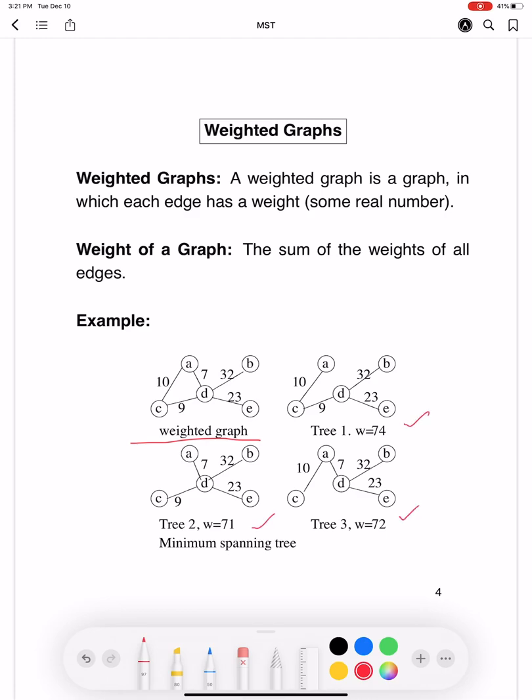And if you add up the weights on the edges of these different graphs, you will see that the different trees have different weights. For example, tree 1 has weight 74, T2 has weight 71, and T3 has weight 72. So all these different graphs have different weights.